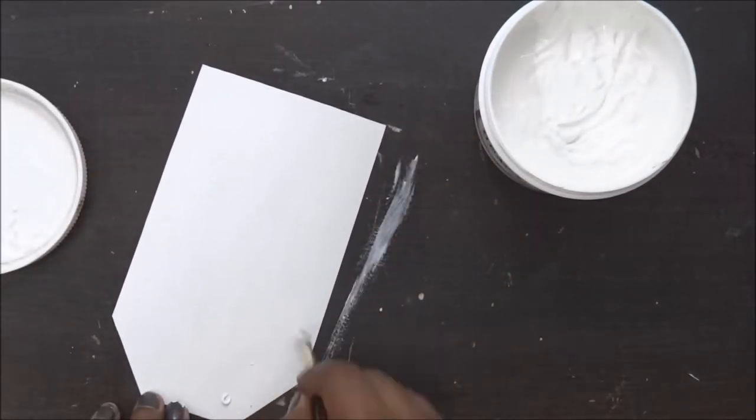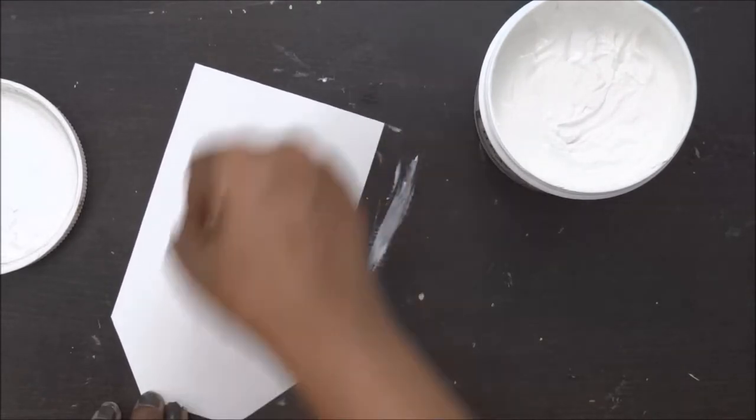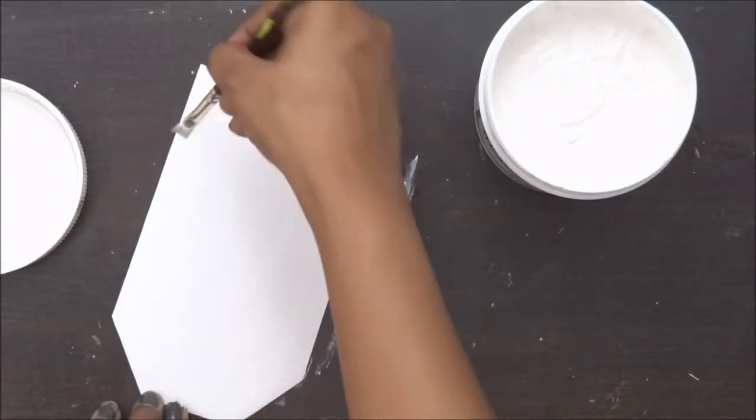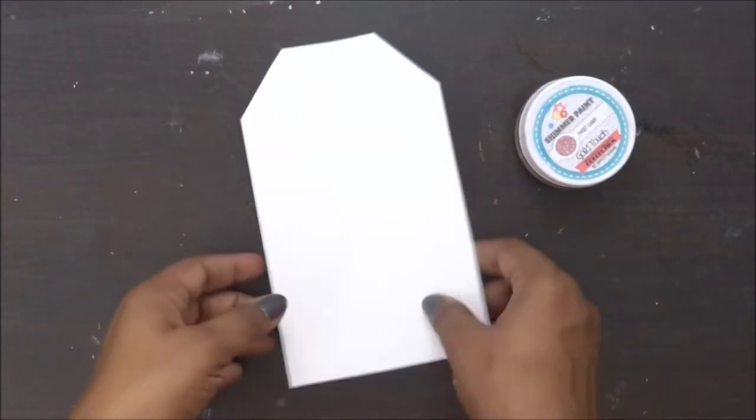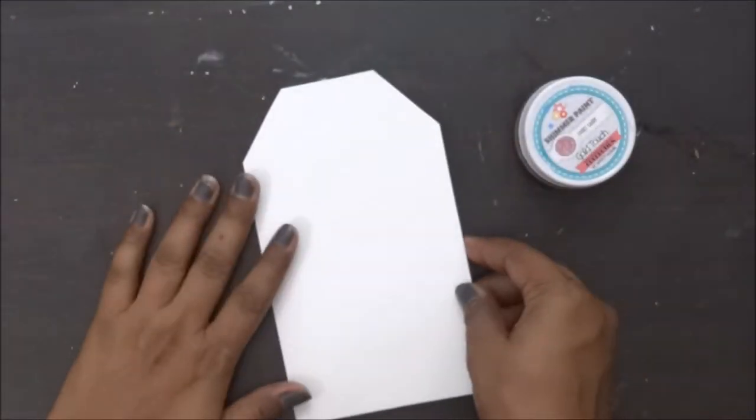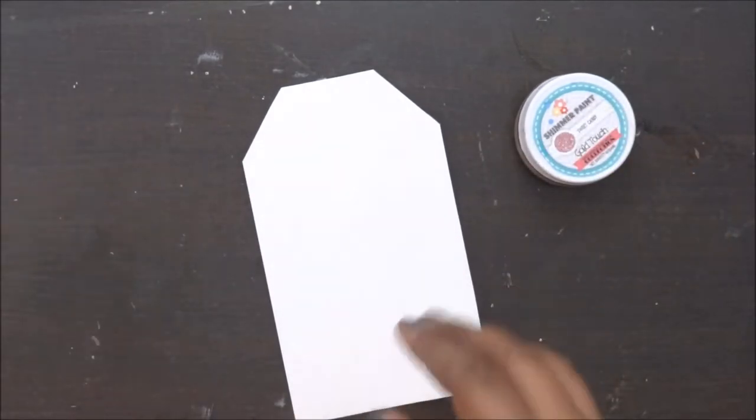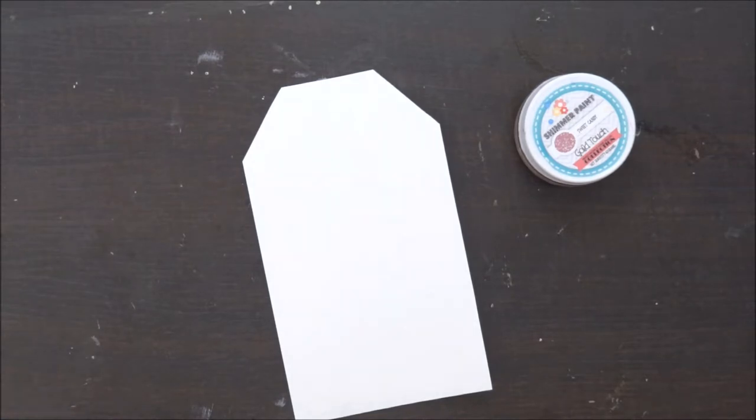Once my gesso has dried out completely - it has to be really dried out completely - then you can start with the colors. I'm using my shimmer paint and I'm using a wet wipe. This is the technique I learned from Vicky.